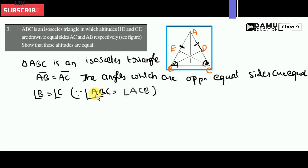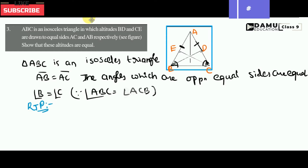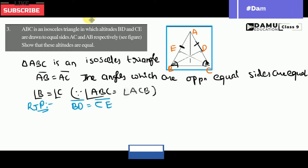So those two angles are equal. Now what we have to show is that the altitudes are equal to each other. So the Required To Prove, RTP, is: BD will be equal to CE.